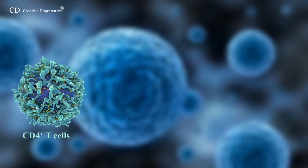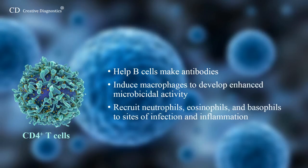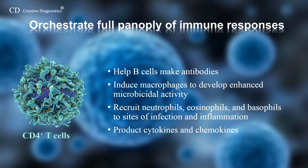These cells suppress or regulate immune responses through their capacity to help B cells make antibodies, to induce macrophages to develop enhanced microbicidal activity, to recruit neutrophils, eosinophils, and basophils to sites of infection and inflammation, and through their production of cytokines and chemokines, they orchestrate the full panoply of immune responses.